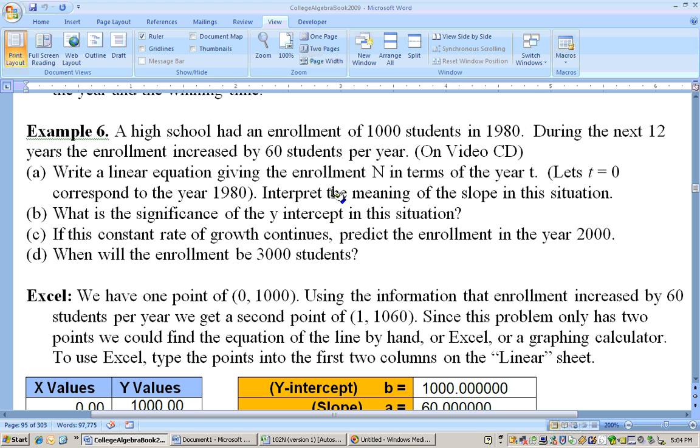And I think we answered what the meaning of the slope is. It's telling us that it's going up by 60 students every year. The y-intercept is how many we had at the start, and that would be 1,000 students in 1980.